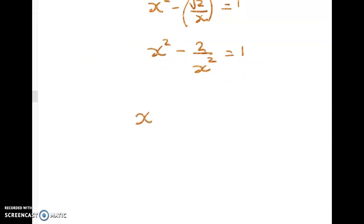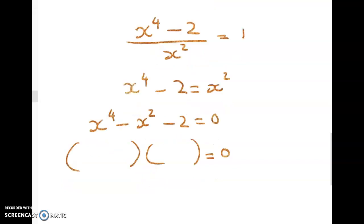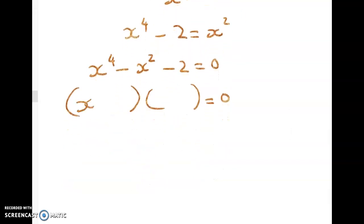So I'm going to get a quartic x to the power of 4 minus 2 over x squared is equal to 1 and that turns into a disguised quadratic. And you can either write u equals x squared or you can go straight to solving. So this one's a pretty easy disguised quadratic.